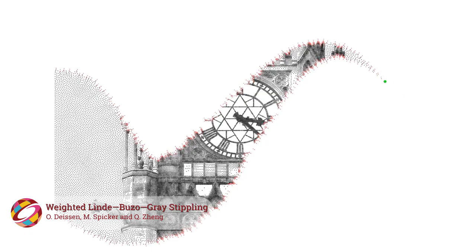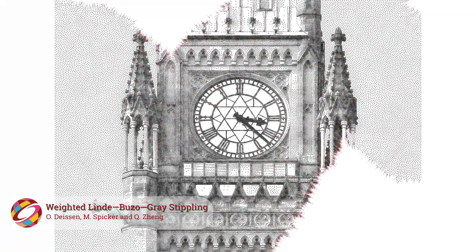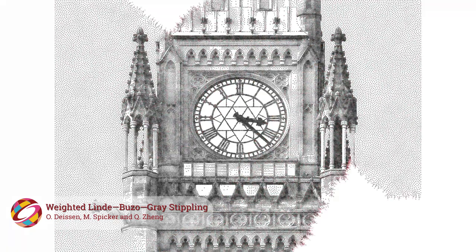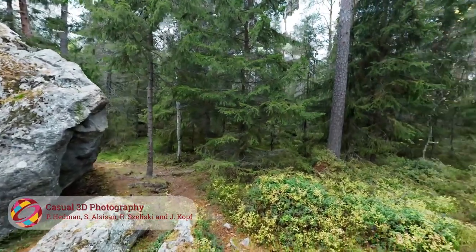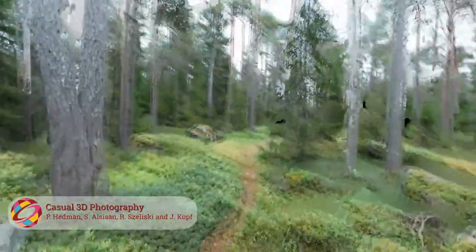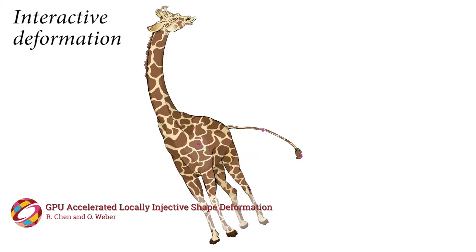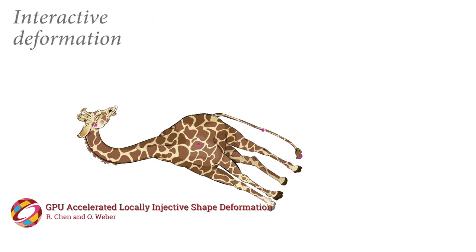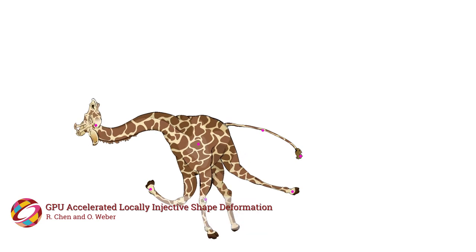A new stippling algorithm distributes points based on Voronoi diagrams and even produces coherent animation. It's complicated to get a 3D photograph, but the method shown here uses a set of input photos taken with a handheld cell phone camera. This GPU-accelerated meshless shape deformation algorithm can produce deformations faster than ever before.